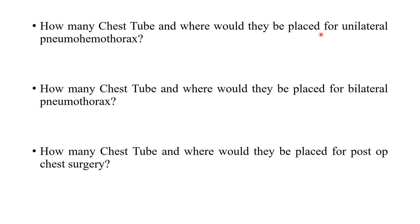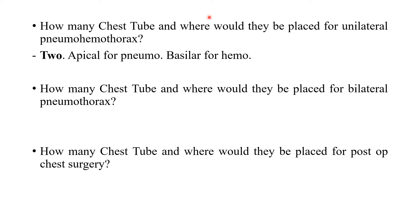For unilateral pneumothorax, how many chest tubes are placed and where? Unilateral means one side. For pneumothorax, air is removed via an apical tube. So for unilateral pneumothorax, one chest tube is placed apically on the affected side.